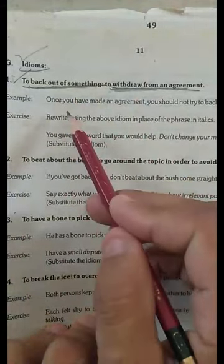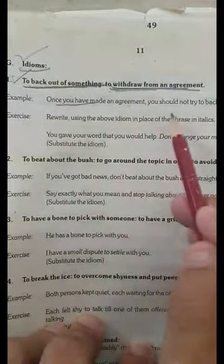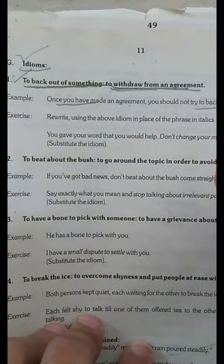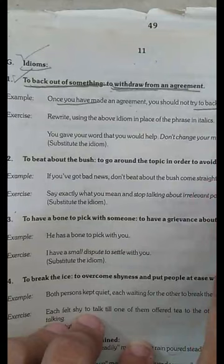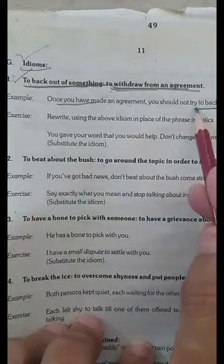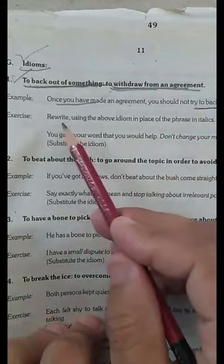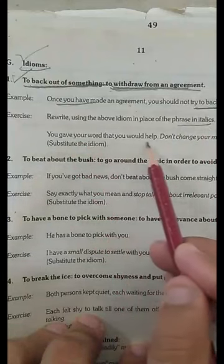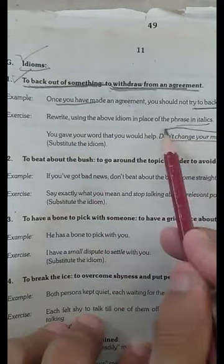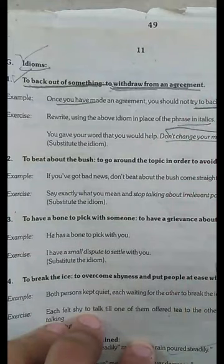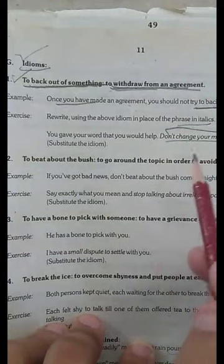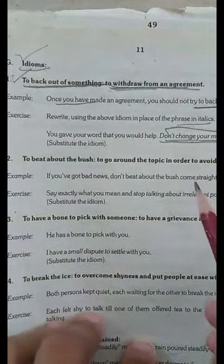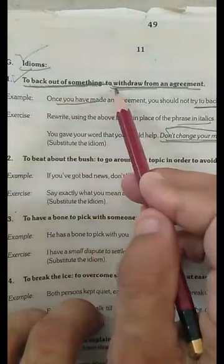Example: Once you have made an agreement, you should not try to back out of it. If you have made an agreement, you don't have to back out or withdraw. Here we write using the above idiom in place of the phrase in italics: 'You gave your word that you would help, don't change your mind now.' Once you have agreed or made an agreement, you must complete it. So I think you understand, to back out of something means to withdraw from the agreement.